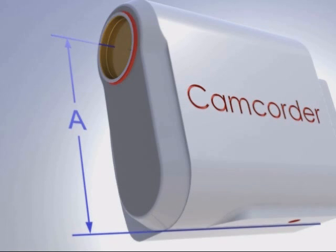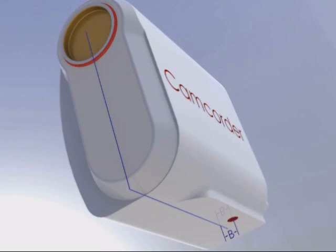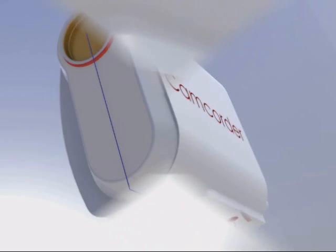Many cameras do not have the threaded hole for the tripod shoe screw in direct alignment with the center of the camera lens. The B dimension is the offset of this threaded hole from the center line of the camera lens.